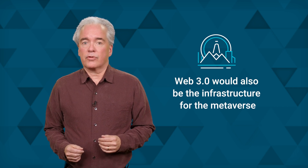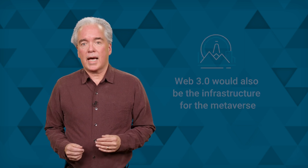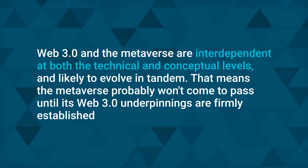The greater transparency provided by blockchain ledgers could improve customer service because both parties will have access to the record of transactions. Web 3.0 would also be the infrastructure for the metaverse, a 3D virtual world where digital representations of people called avatars interact and conduct business. But like Web 3.0, the metaverse doesn't exist yet. It will likewise rely on blockchain or a comparable decentralized technology for its data infrastructure and finances, and use AI to be more responsive to users. Web 3.0 and the metaverse are interdependent at both the technical and conceptual levels and likely to evolve in tandem. That means the metaverse probably won't come to pass until its Web 3.0 underpinnings are firmly established.